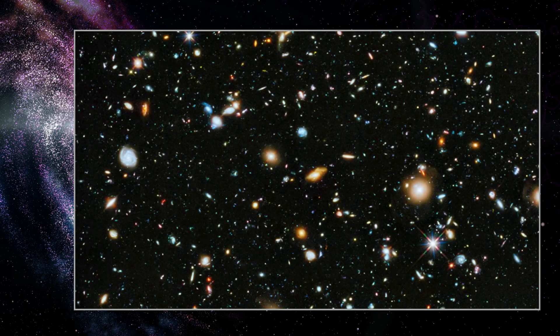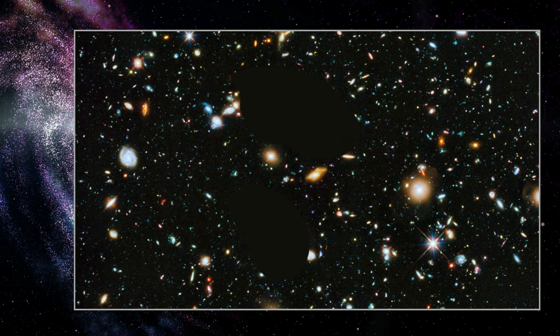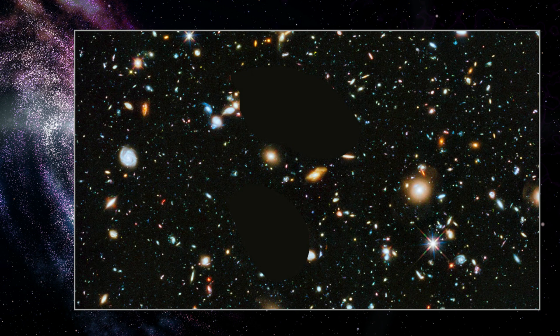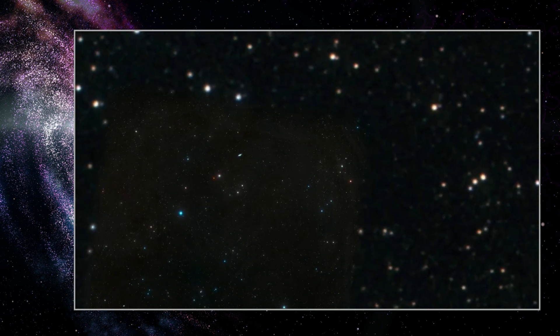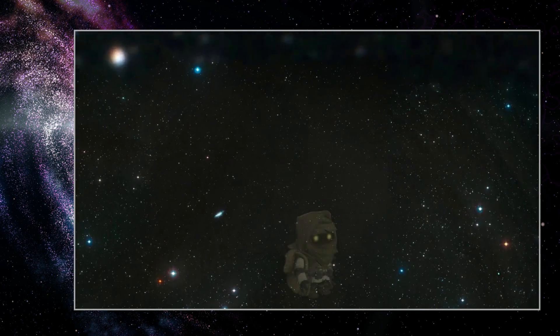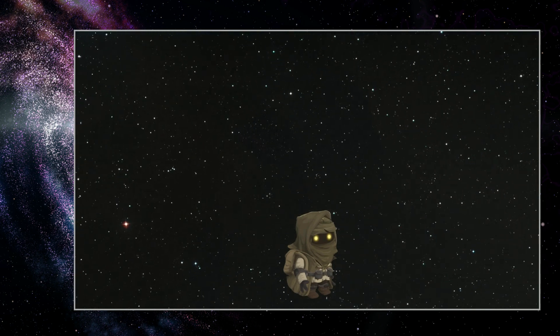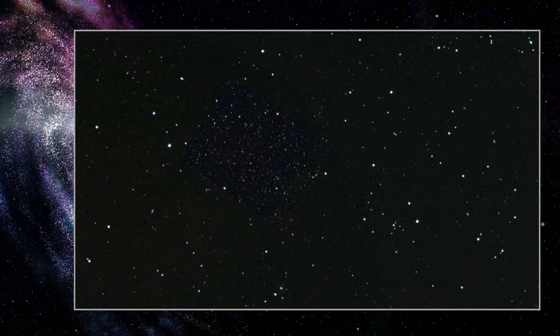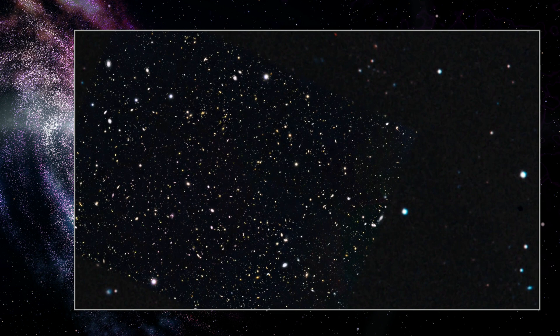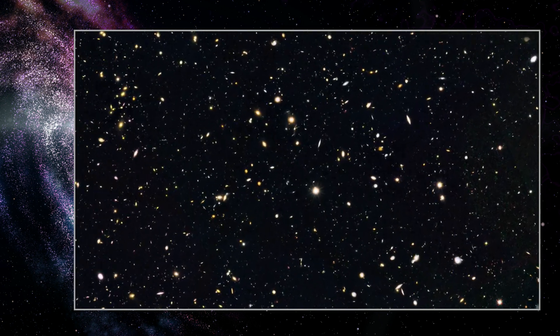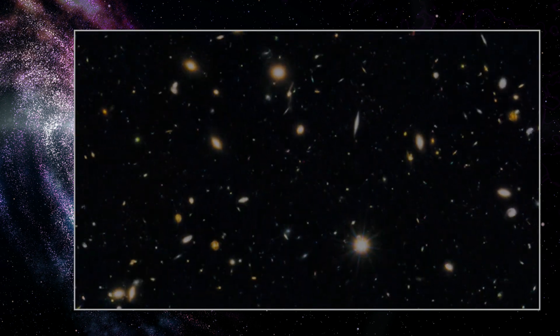Chunks of the universe are vanishing before our eyes. All the galaxies, stars, planets, and possibly alien species those chunks contain disappear with them. These chunks aren't ceasing to exist, though. They are simply becoming part of the unobservable universe.